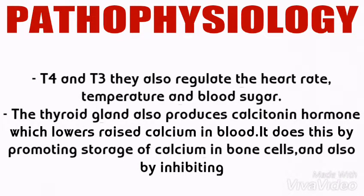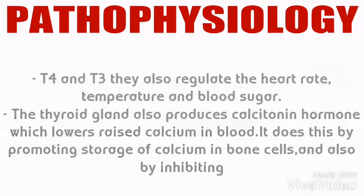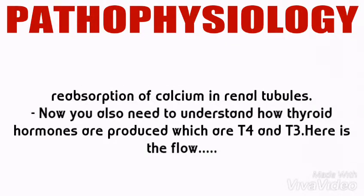T4 and T3 also regulate the heart rate, normal body temperature, and blood sugar. The thyroid gland also produces calcitonin hormone, which lowers raised calcium in the blood. It does this by promoting storage of calcium in bone cells and also by inhibiting reabsorption of calcium in the renal tubules.